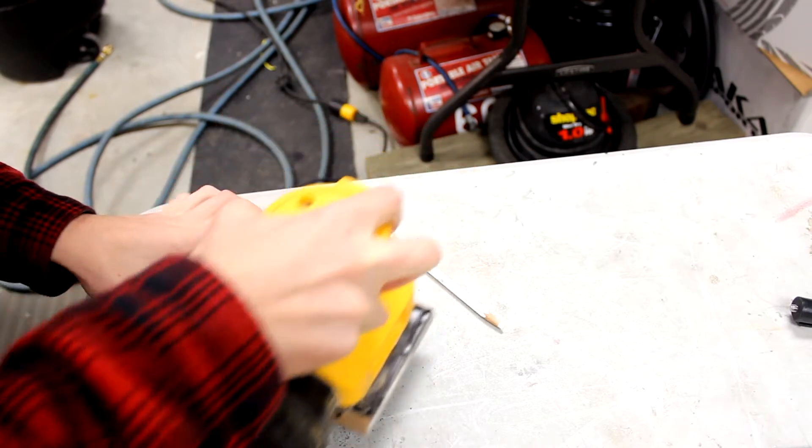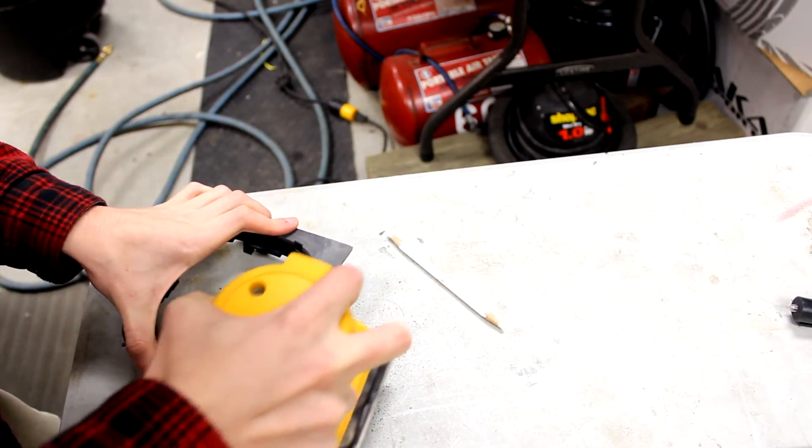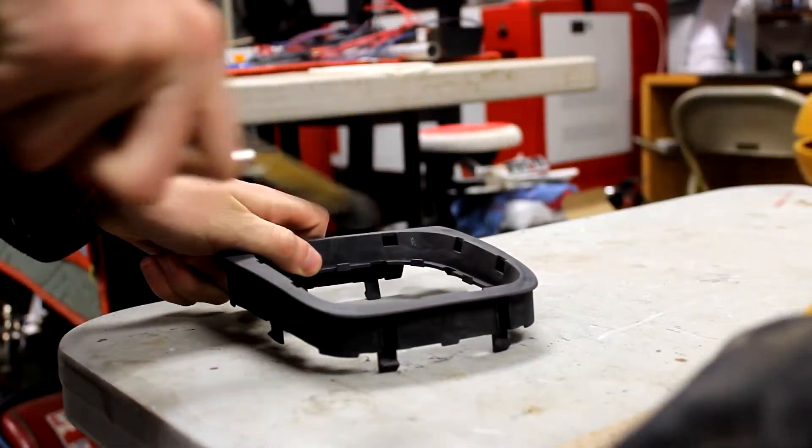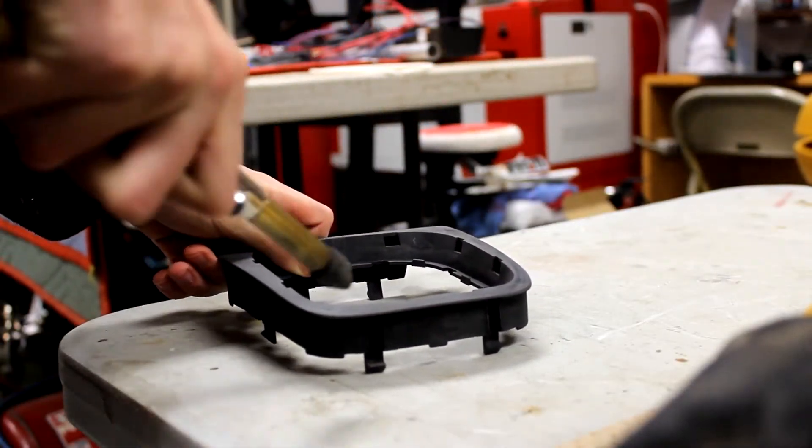Also, don't forget to get the edges and all the surfaces that you're trying to refinish. While you're sanding, you could use an air gun to get that plastic dust off and to check your progress.